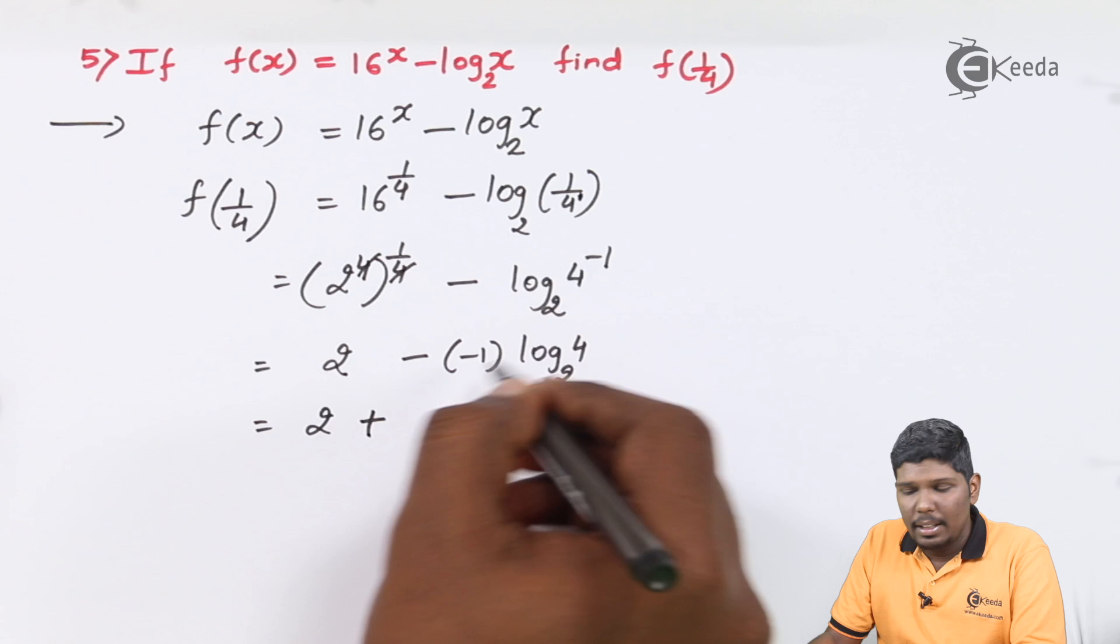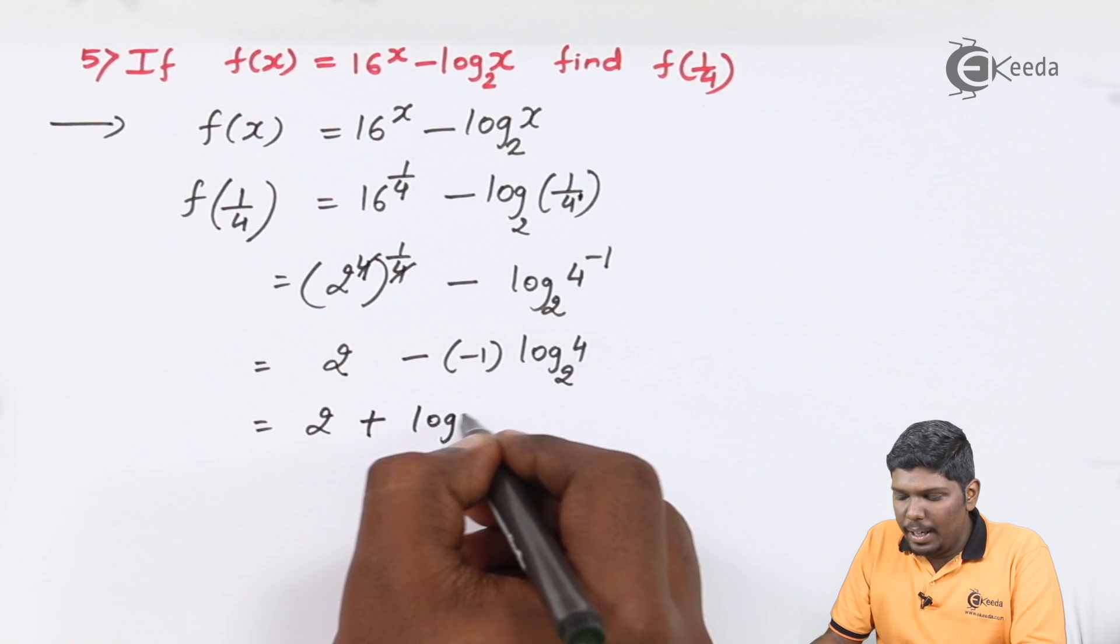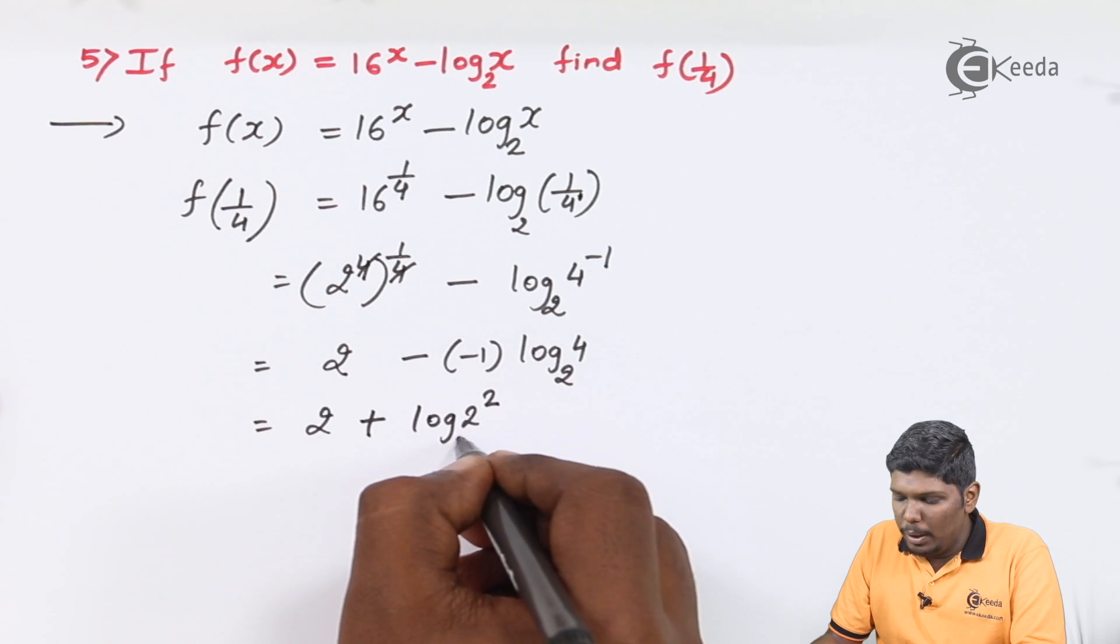Minus into minus becomes plus. Log 4 can be written as log 2 square to the base 2.